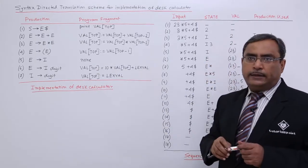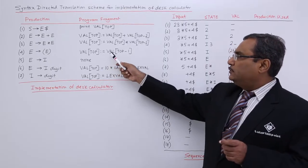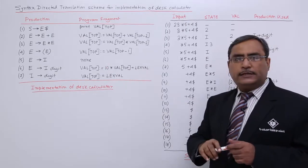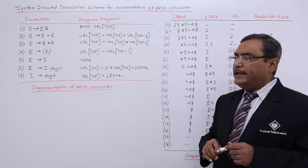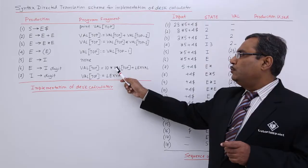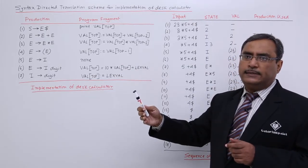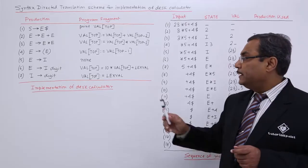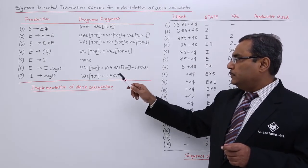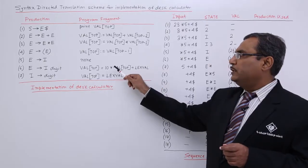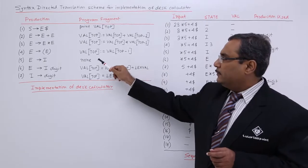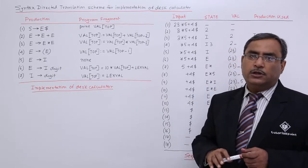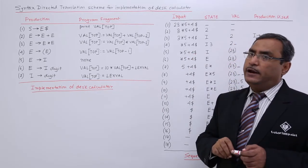E produces (E) — expression — so val[top] is equal to val[top minus 1]. E produces I, where I means integer and no semantic action has been declared. E produces I digit: then 10 into val[top] plus the digit will be analyzed by the lexical analyzer, which will return the lex value; that lex value will be added and kept on the top of the stack. The previous val[top] will be popped out, the expression evaluated, and the new value formed will be kept at the topmost address of the stack. I produces digit, so val[top] will get the lex value. This is the syntax directed translation scheme.